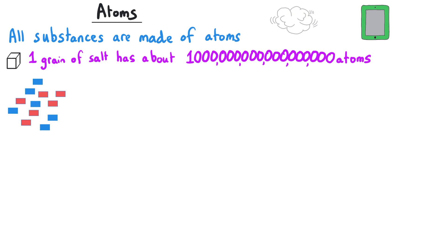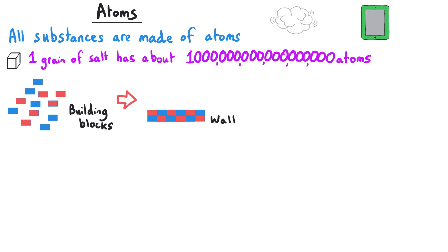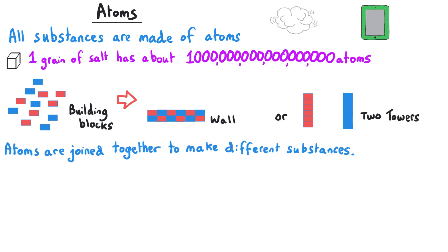The best way to visualize atoms is to think of them as the building blocks used to make up all the substances that we see in our lives, just in the same way that a set of building blocks could be organized together to make a wall or separated into making two different coloured towers. Atoms can be constructed together in the same way to make a huge variety of different substances.